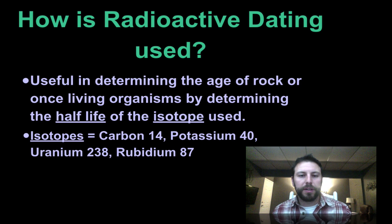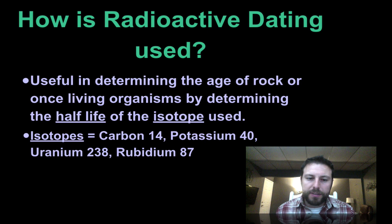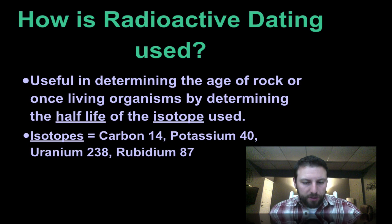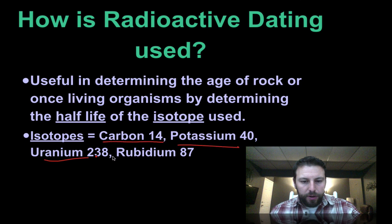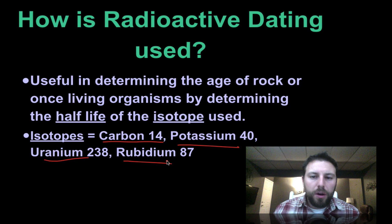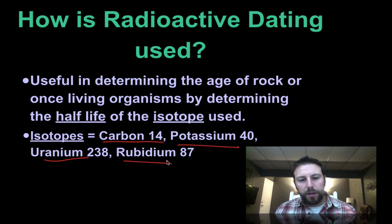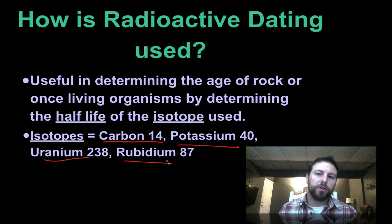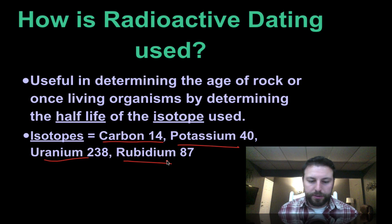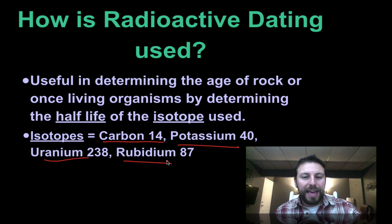Certain radioactive isotopes break down in certain times. These isotopes — such as carbon-14, potassium-40, uranium, and rubidium-87 — we know how fast they break down from their unstable to stable state. From that, we're able to determine the age of a rock or once-living organisms by using what's known as the half-life of those isotopes.